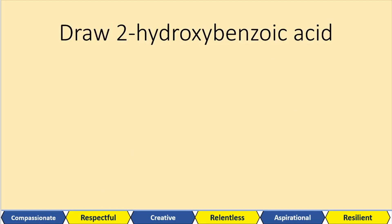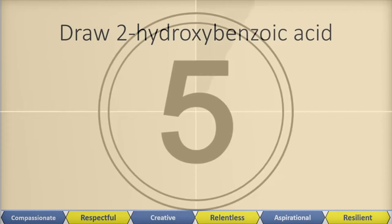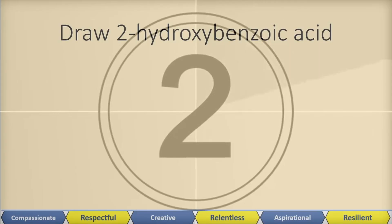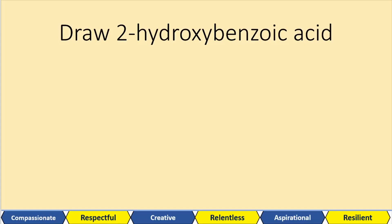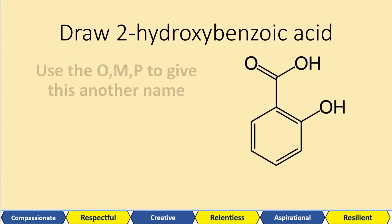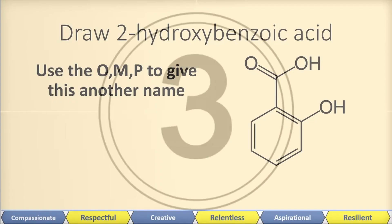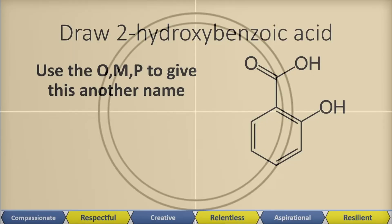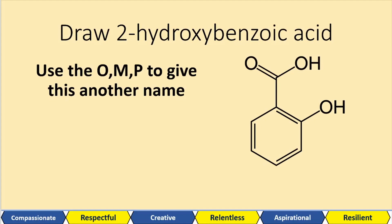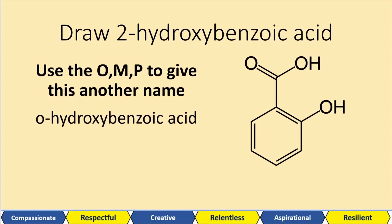How about trying to draw from the name? Try to draw 2-hydroxybenzoic acid. You just have the benzoic acid and then on the second carbon — which could be on the left or right, it doesn't matter — just add your hydroxyl group. Now use the OMP naming scheme to give this another name. This is on the second carbon, right next to the first. Remember 'ortho' is like 'orthodox' — correct speech, right speech, standing up straight. So the second carbon is O: ortho-hydroxybenzoic acid. The third position is meta and the fourth position is para.